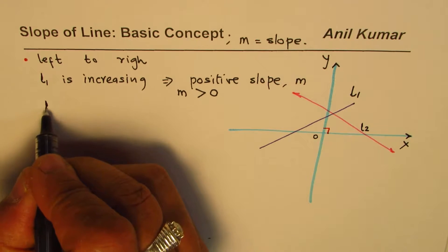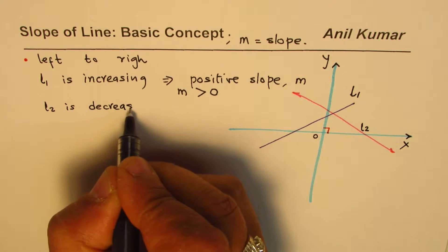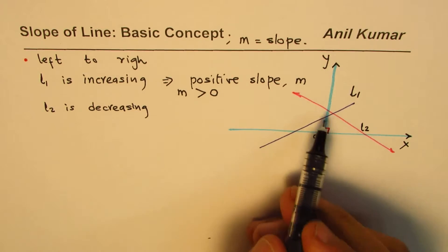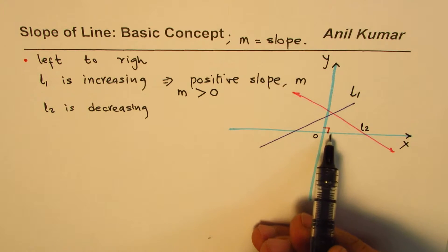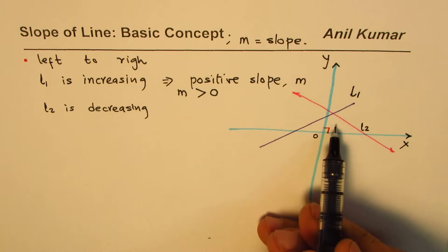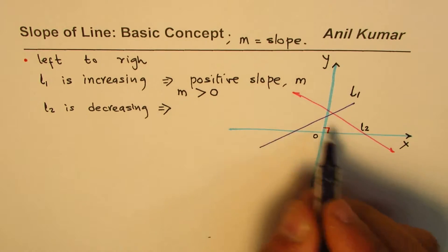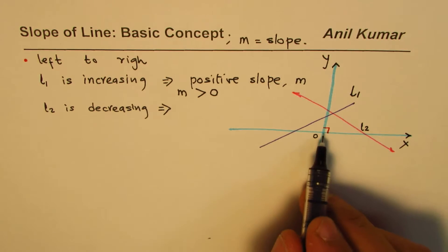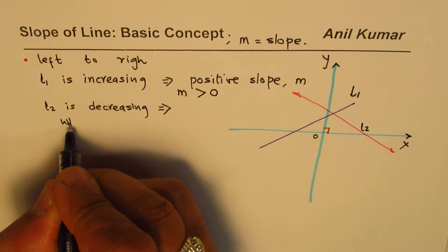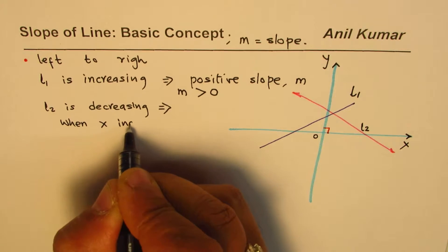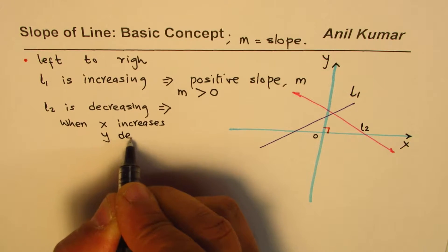In this case, line 2 is decreasing. What do you mean by decreasing? As you move from left to right, the value of y is dropping. So when the value of y decreases for increase in x, decreasing means when x increases, y decreases.